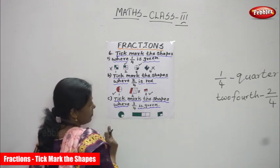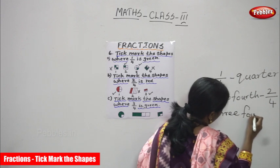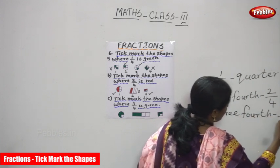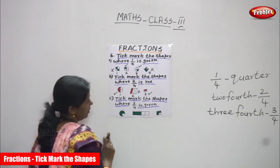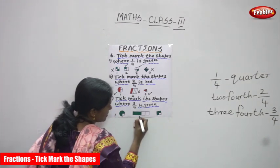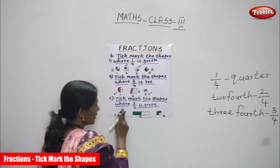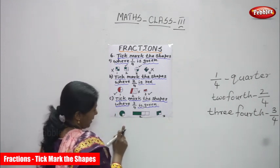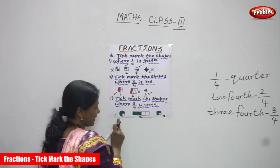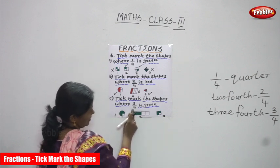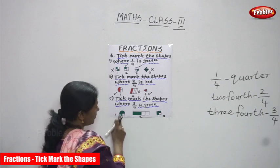Tick mark the shapes where three by four is green. Three fourth means three by four. Look at the first diagram — it is a circle. I cut it into four equal parts and shaded three parts in green color. Only one part is not shaded. Three parts shaded in green means this is three fourth, or three by four.